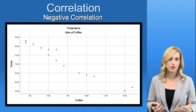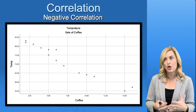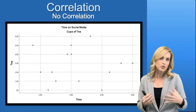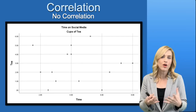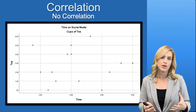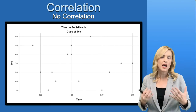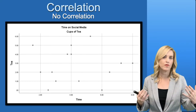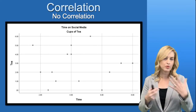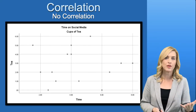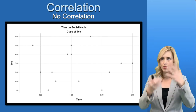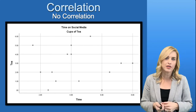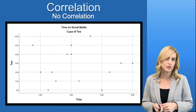Another type is no correlation at all — a zero correlation. This is where we look at two variables that really aren't related to one another, such as the time we spend on social media and the number of cups of tea we drink. There's really no correlation between those two things, and you can see on the scatter plot that there's no relationship between these two variables.